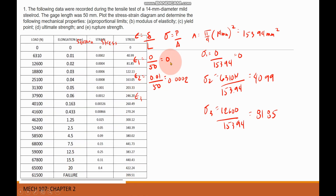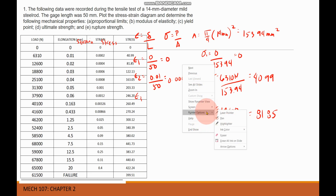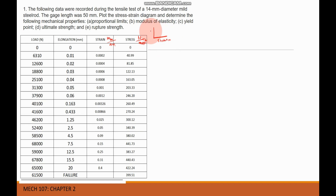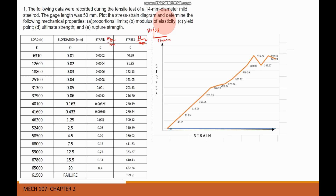Here is the tabulated data for strain and stress of our material. Strain is in mm/mm and stress is in N/mm² (MPa). We are now ready to plot the data, with strain on the x-axis and stress on the y-axis. The stress versus strain diagram has been prepared.